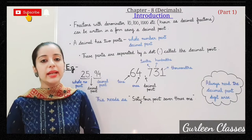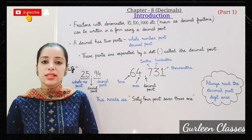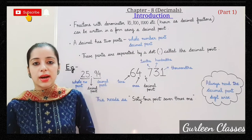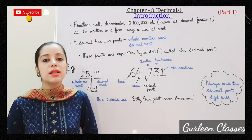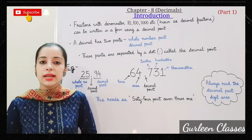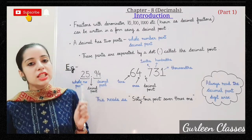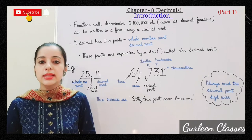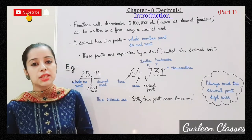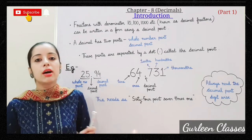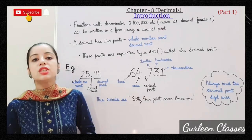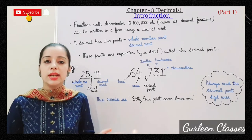Let us start with the introduction of Chapter 8: Decimals. Fractions with denominators ten, hundred, thousand, etc. are known as decimal fractions. They can be written in a form using a decimal point. So these fractions with denominators ten, hundred, thousand are called decimal fractions.